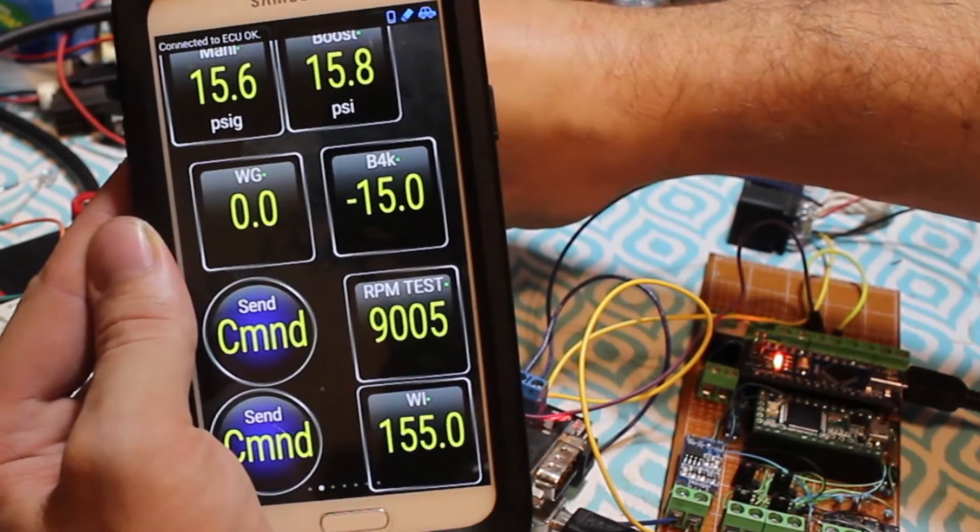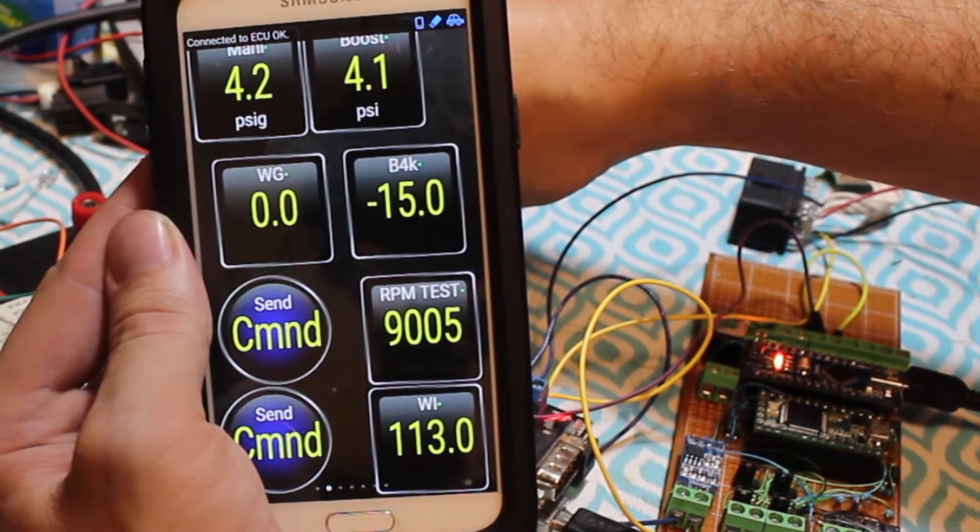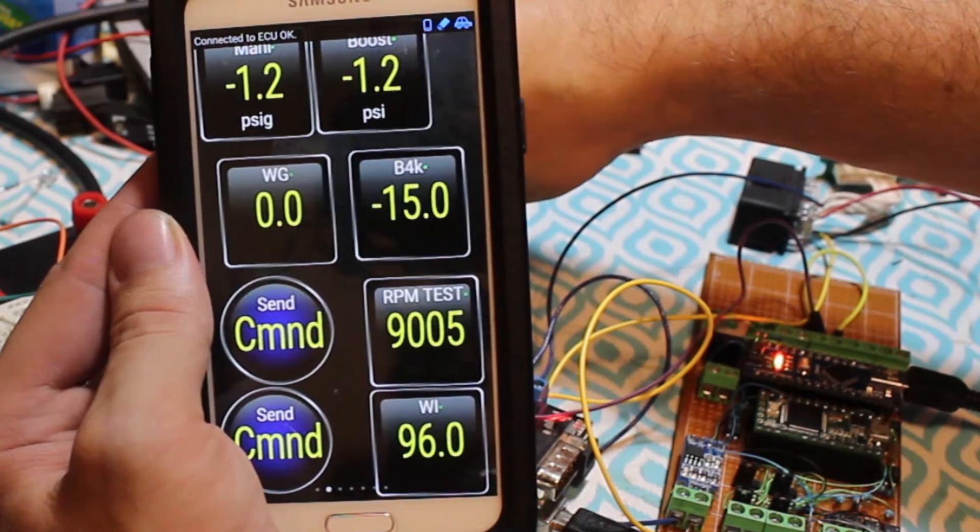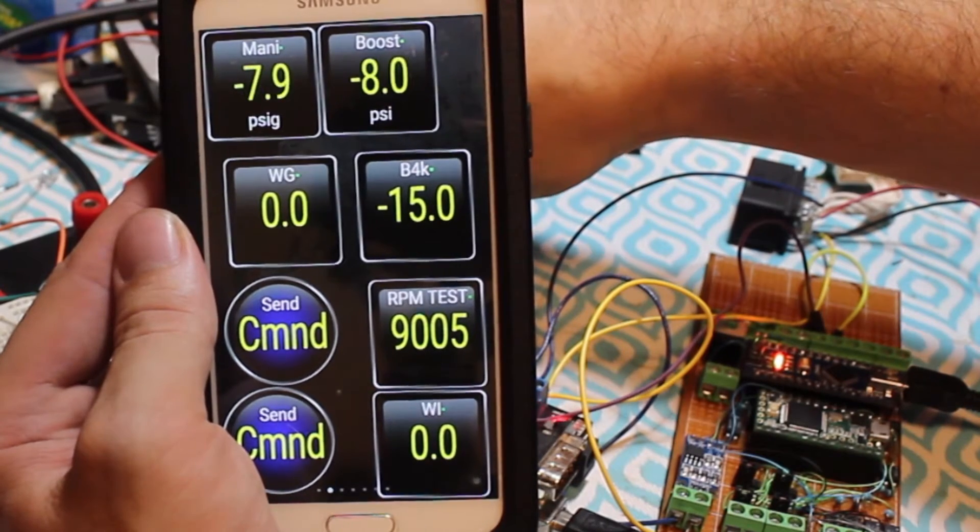The parameter that says B4K is reading the 4,000 RPM boost set point. By sending a custom OBD2 command, I can change it. Right now there are two buttons. One is set for full vacuum, and the other is set for 13 PSI of boost.